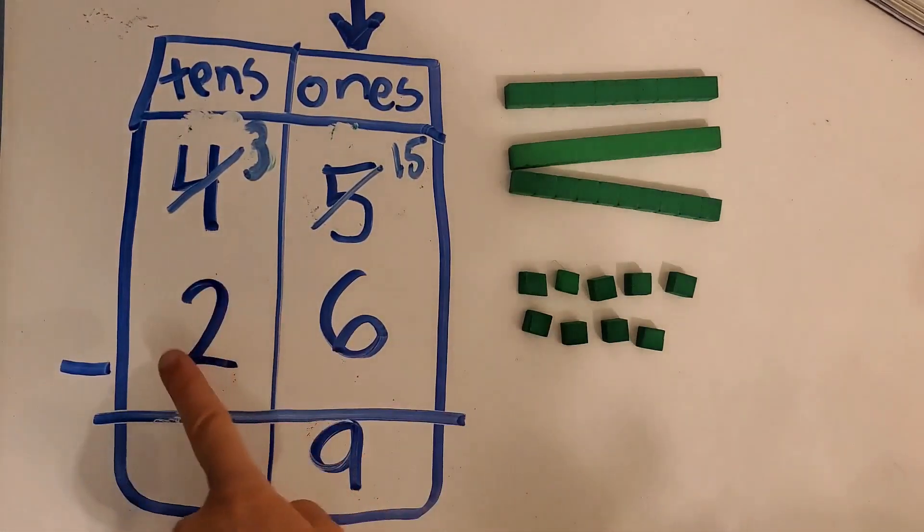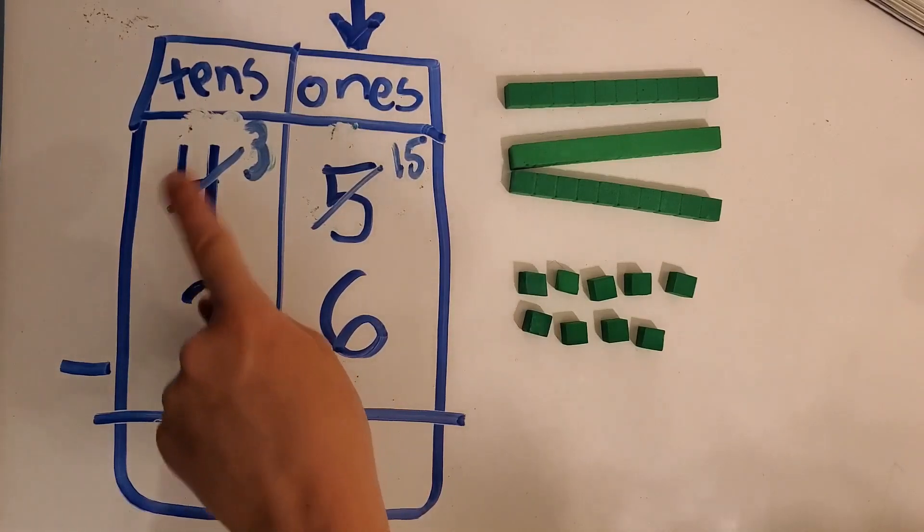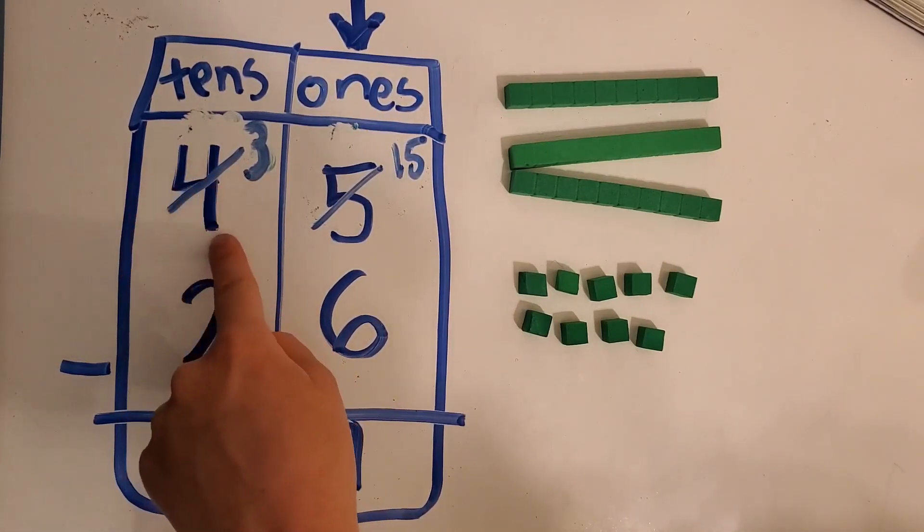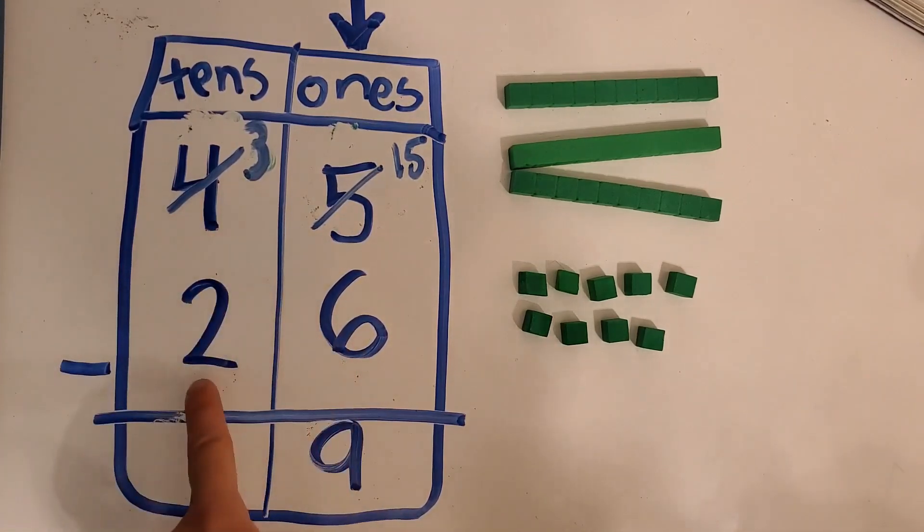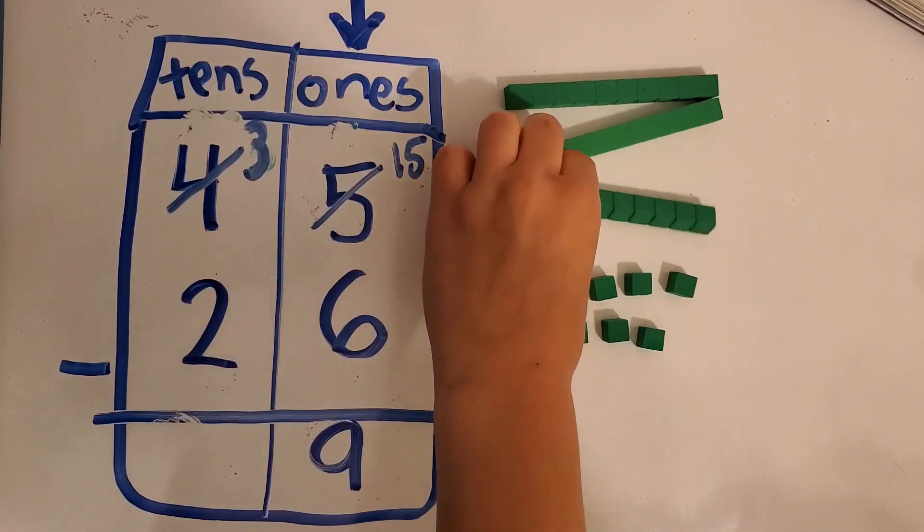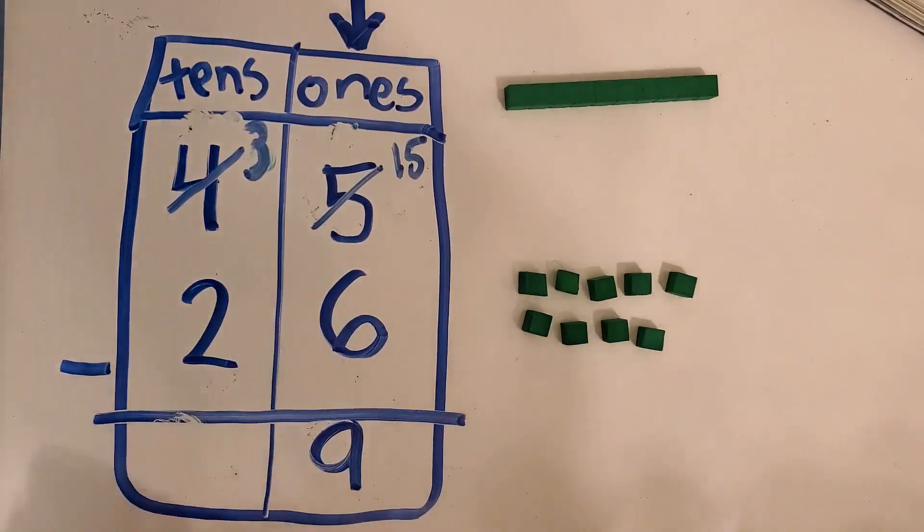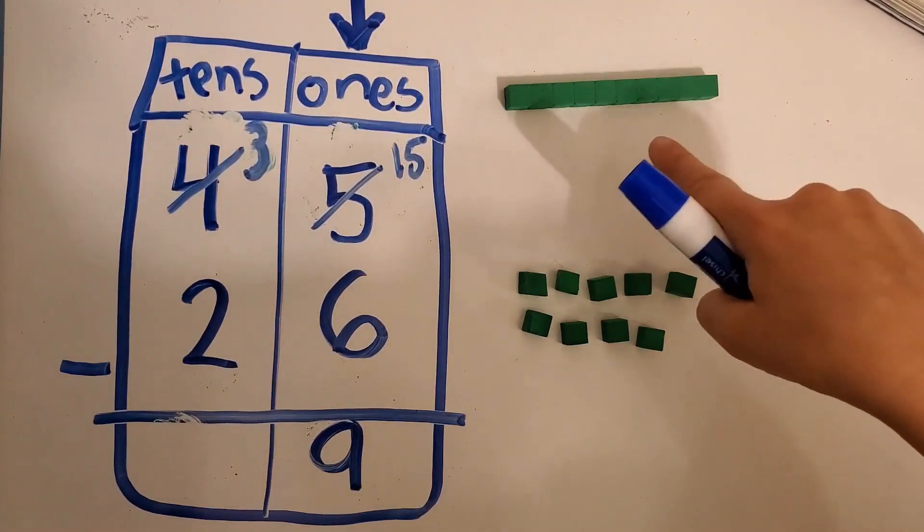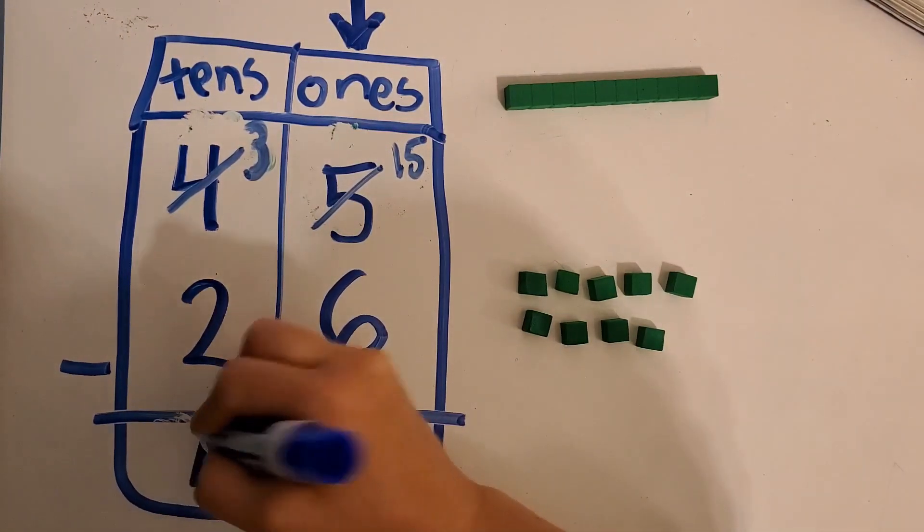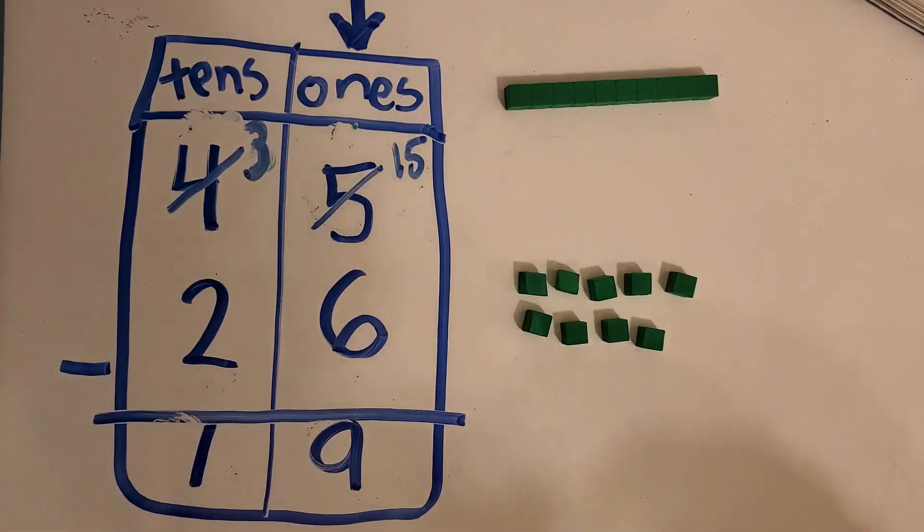Now let's look over at our tens. Remember, we regrouped four, we regrouped one of our tens. So now there's three tens left. So three tens minus two tens. We need to take away these two. And how many tens do we have left? One. We have one left. So our answer is one ten and nine ones, or 19.